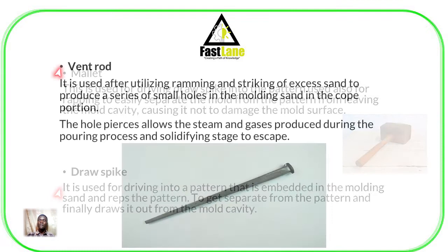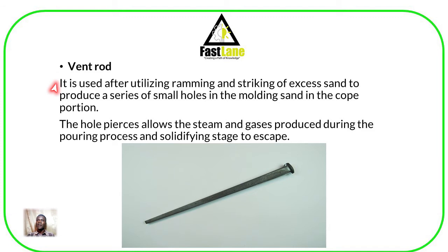Then we have what we call a vent rod. After ramming and striking off excess sand, you use a vent rod to produce a series of small holes. It is used to create hollow pieces around the mold cavity so that it can permit the escape of steam and gases produced during the pouring of molten metal, and to allow solidification of the molten metal to take place.